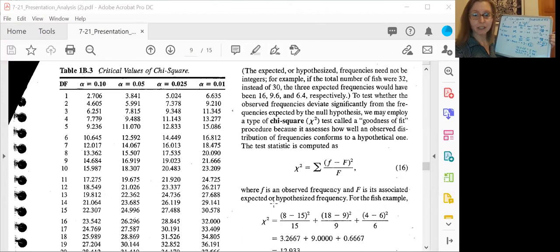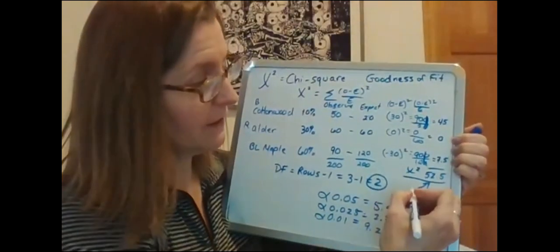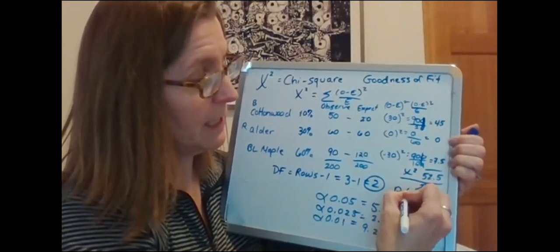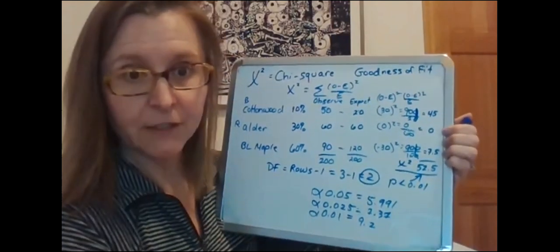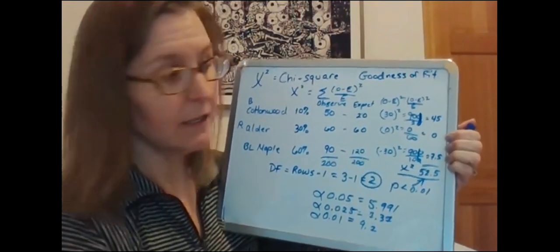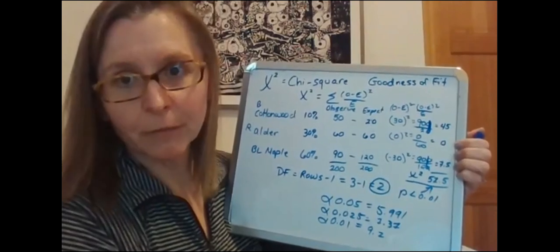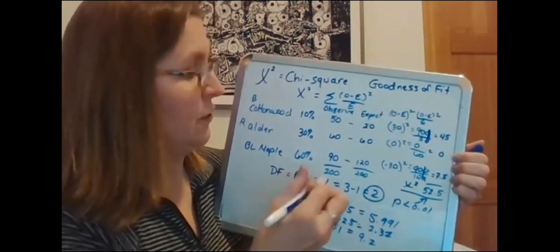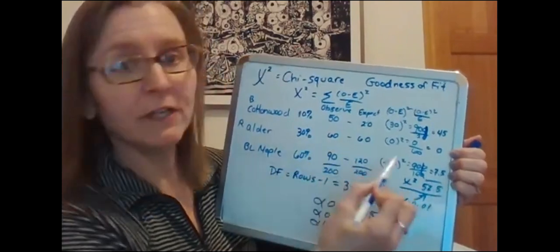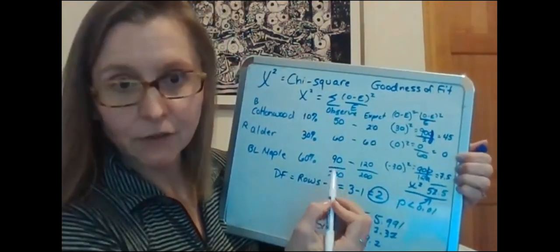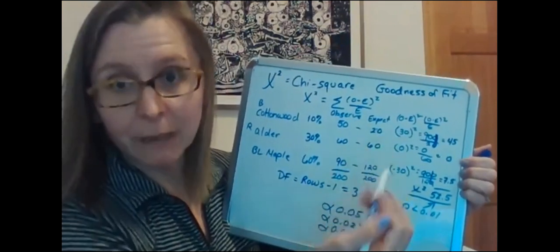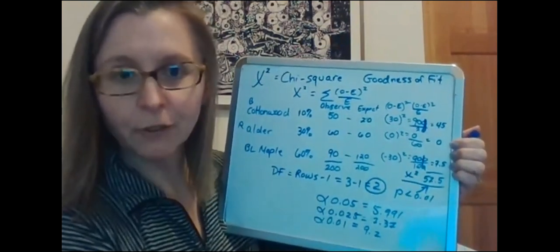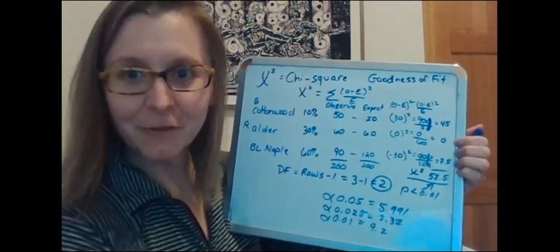I'm going to stop sharing my screen here. I can say with confidence that this result is a p of smaller than 0.01 just by the hand calculation. And it's probably a very small probability. And if you look at these proportions what you're seeing is no difference in what you'd expect by chance on alder, but fewer birds foraging on big leaf maple and more birds foraging on cottonwood. And so that's a chi-squared goodness of fit test.